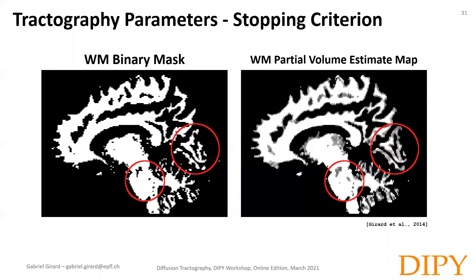One of the problems seems to be regions with partial volume fraction of white matter, gray matter, and CSF. In those voxels, orientation information is harder to accurately estimate from the diffusion data, making it more likely to find incoherent orientations. This will likely force the tractography to stop in the white matter in some cases. Moreover, small accumulated errors can lead to tractography incorrectly propagating outside the white matter mask.